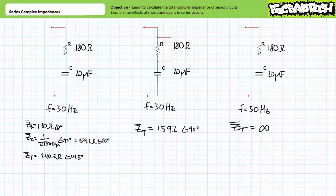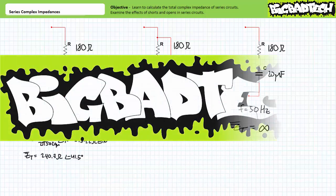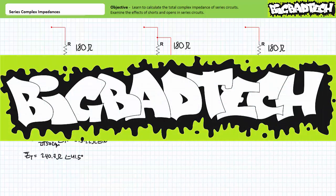That's about it for our discussion of series complex impedances. In conclusion, this lecture examines series complex impedances. We learned that series or inline complex impedances add up, but one must account for direction when doing so. Additionally, we examined the effects of shorts and opens in series relationships. Remember to review these concepts as often as you need to really drive it home. Thank you very much for your attention and interest, and we'll see you again during the next lecture. Remember to tell your lab partner about this resource and be sure to check out the Big Bad Tech channel for additional resources and updates.